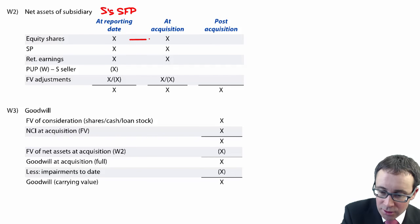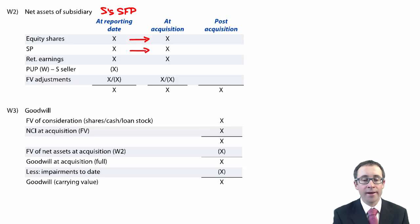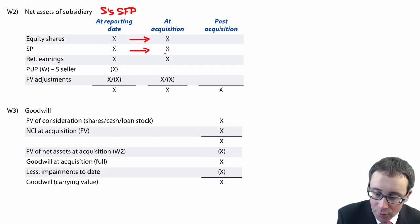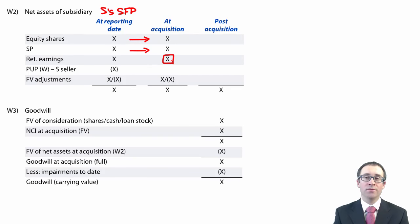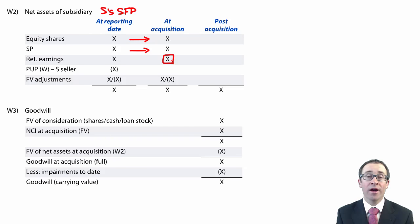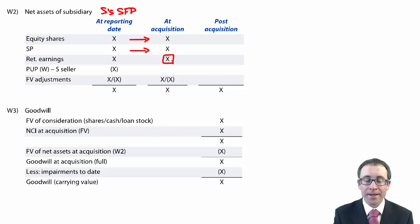Your equity shares and share premium — even at this level — do not change from the reporting date to the acquisition date. You then need to work out the retained earnings at acquisition. Usually that will be given to you within the question. On the very rare occasion you might need to work it out if there has been a mid-year acquisition, but the retained earnings at acquisition are usually given to you.